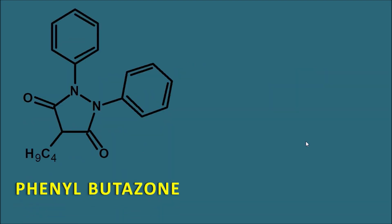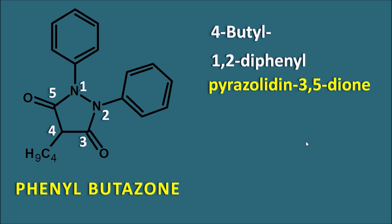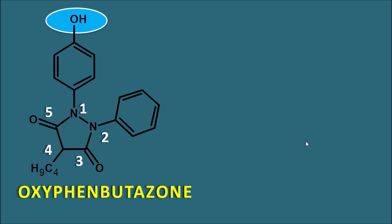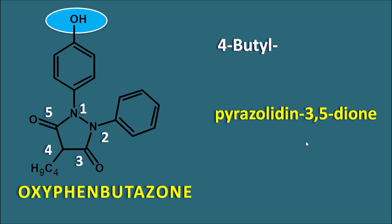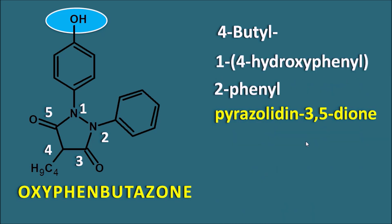The next class is the pyrazolidine dione derivatives. Phenylbutazone is one drug in this class — the central heterocyclic ring is pyrazolidine, numbered 1 through 5. This is a pyrazolidine-3,5-dione with a butyl side chain at the fourth position and phenyl groups at the first and second positions (1,2-diphenyl). So 4-butyl-1,2-diphenylpyrazolidine-3,5-dione is phenylbutazone. A similar drug, oxyphenylbutazone, has an additional OH group on one phenyl ring — so it is the same pyrazolidine-3,5-dione with 4-butyl, but the first position has a 4-hydroxyphenyl group instead. That is oxyphenylbutazone.